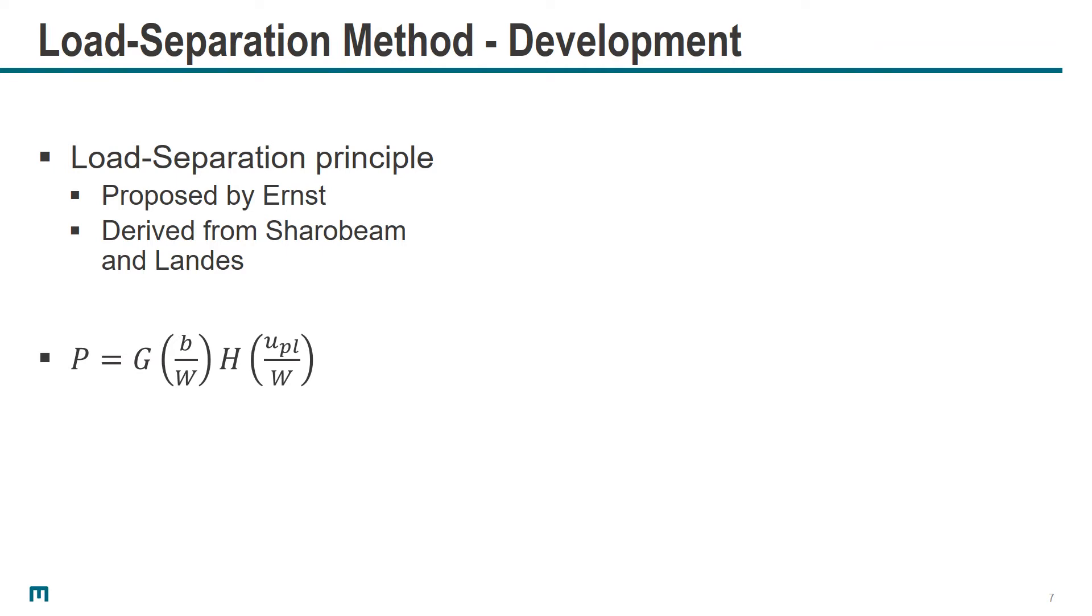If you do this for two different specimens, for example a sharp-notched and blunt-notched specimen, and compare them at the same level of plastic displacement, you get the load separation curve S_sp. If you plot S_sp as a function of plastic deformation, you get a curve with three different regions: one, two, and three. Most interesting for determining fracture parameters are regions two and three.